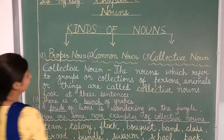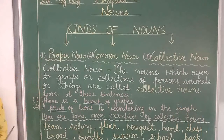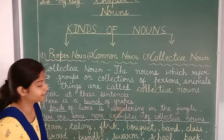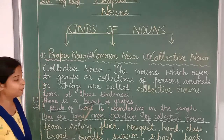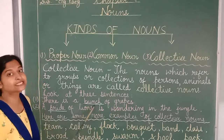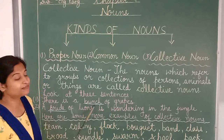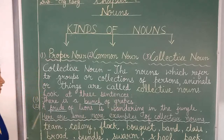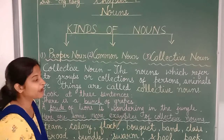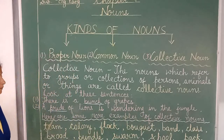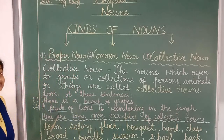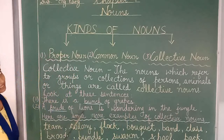Look at these sentences. There is a bunch of grapes. Bunch is a group of grapes. A pride of lions is wandering in the jungle. Pride is a group of lions.